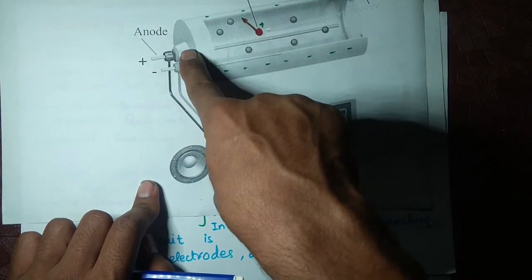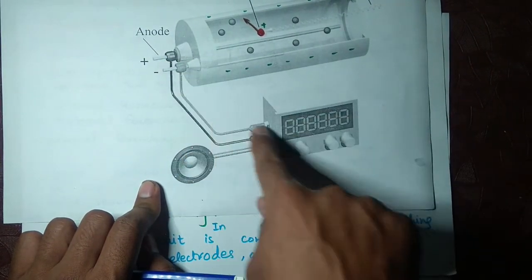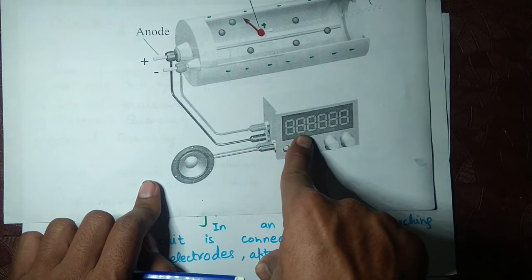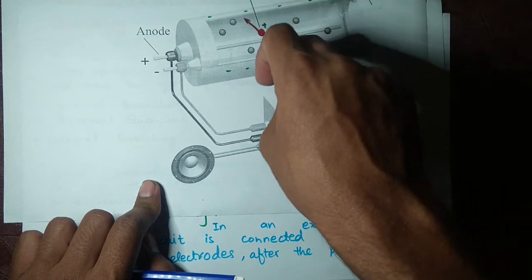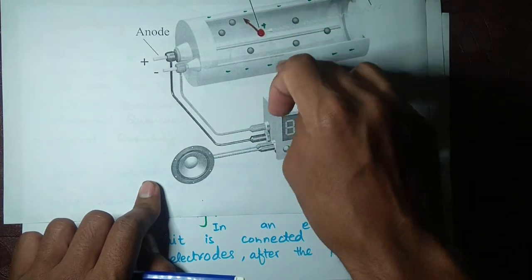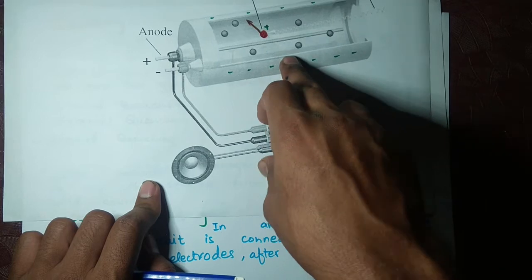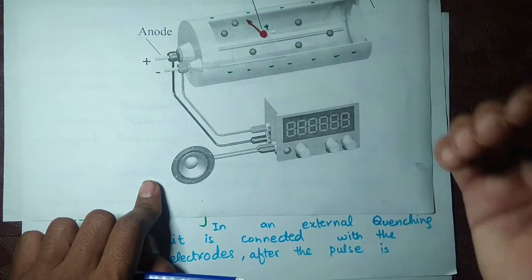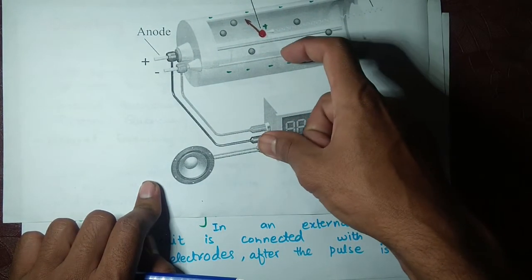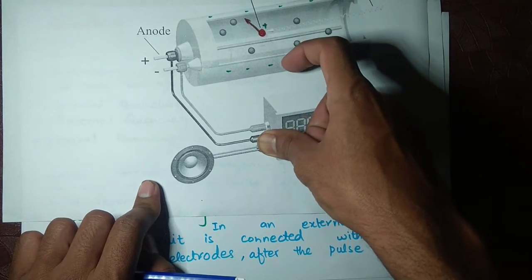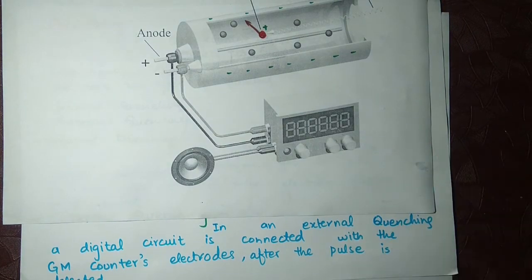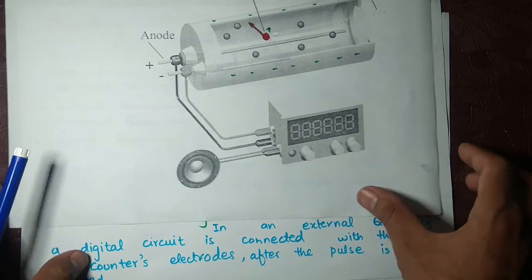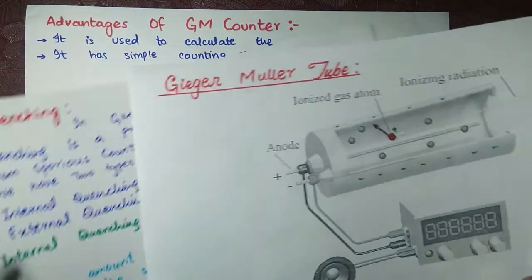When the electron goes back and another true radiation comes in, it makes a new electron and we get the true count. The electrode that was cathode becomes anode, and it now attracts the electron — where before it was repelling, due to the external circuit it now attracts it. This is the procedure for external quenching.